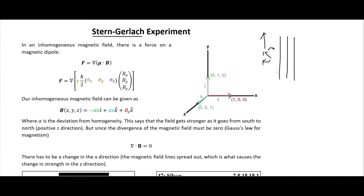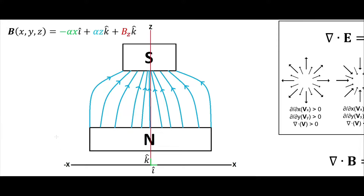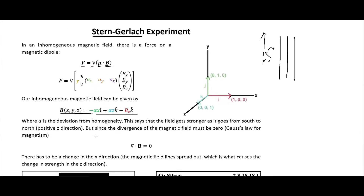The force is given by the gradient of the dot product of our magnetic dipole and our magnetic field. I want to explain what a homogeneous and inhomogeneous magnetic field actually is, and I'll go into a couple of Maxwell's equations — in particular Gauss's law for magnetism. Here is our magnetic field, which is the same one I have on the diagram.